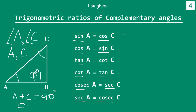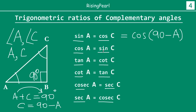So I can write C as 90 minus A — just by simply rearranging, taking A to the other side, I can write C equal to 90 minus A. In other words, all the C's I can replace by writing 90 minus A. So here we can write all the relationships in terms of only one angle, angle A. So what we are saying is sine A is equal to cos of 90 minus A. Similarly, cos A is equal to sine of 90 minus A.